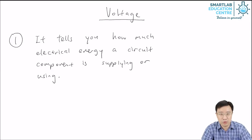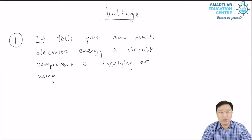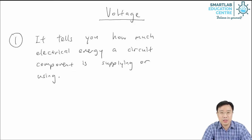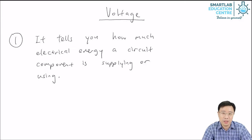If you look at a car battery, what you see is the number 12 with the letter V next to it. It tells you that it is supplying much more electrical energy than a double-A battery, because the number 12 is bigger than the number 1.5.